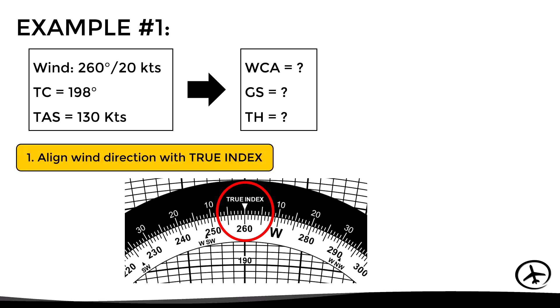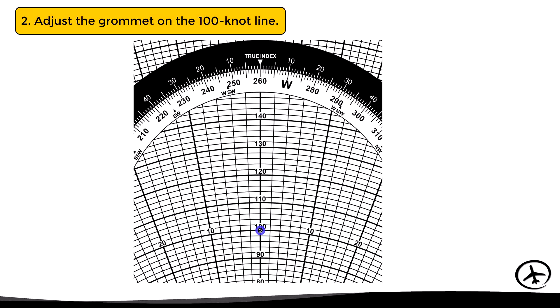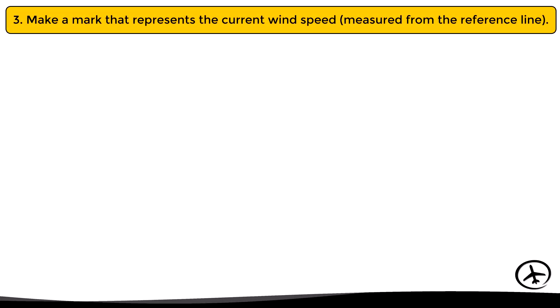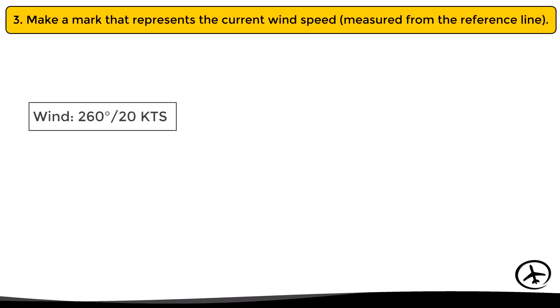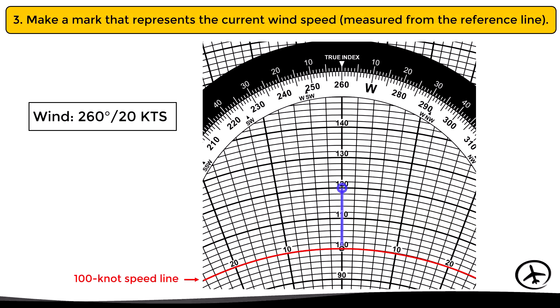Once this is done, the second step is to adjust the grommet on the 100-knot line. This is accomplished by moving the background sliding grid until the 100-knot line coincides with the grommet. Then, using this line as reference, we make a mark that represents the current wind speed. Since the wind speed is 20 knots and we are using the 100-knot line as reference, we make a mark at the 120-knot line directly above the grommet, as we can see in this image.